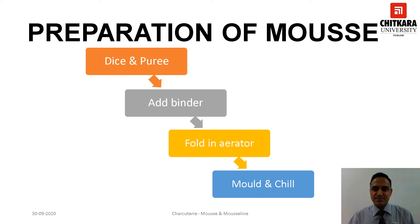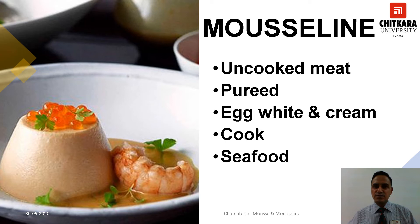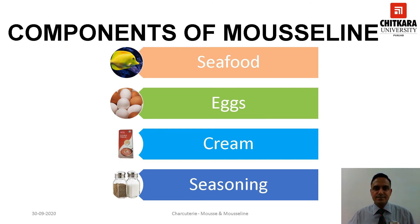Mousseline is made out of a combination of uncooked meat, preferably seafood, that is pureed and bound with egg whites and sometimes cream. They are set by cooking. Mousseline can be prepared using the following components: seafood, eggs, cream, seasoning, and flavoring.